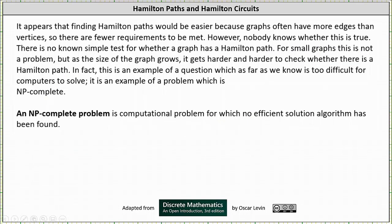It appears that finding Hamilton paths would be easier because graphs often have more edges than vertices, so there are fewer requirements to be met. However, nobody knows whether this is true — there is no known simple test for whether a graph has a Hamilton path. For small graphs this is not a problem, but as graph size grows it becomes harder and harder to check. In fact, this is an example of a problem which, as far as we know, is too difficult for computers to solve efficiently. It is an example of an NP-complete problem — a computational problem for which no efficient solution algorithm has been found.